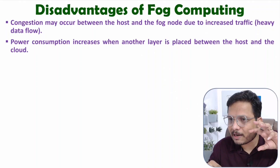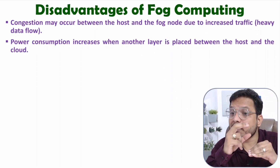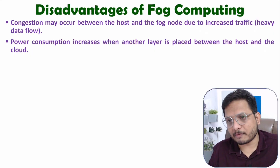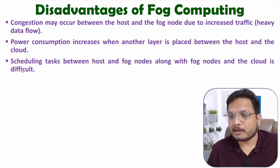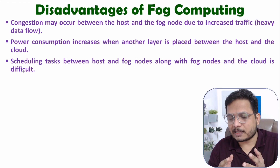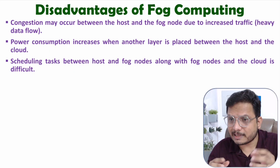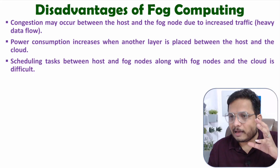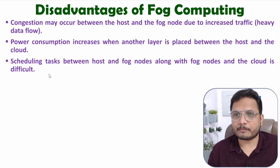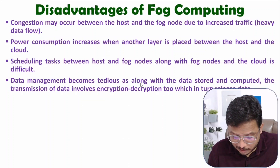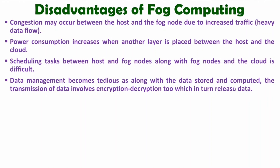Power consumption increases because we are adding an additional node — the fog cloud. Previously in cloud computing one device accessed the cloud directly, but now we are adding an additional fog node, increasing power consumption. Scheduling tasks between the host and fog nodes, and between fog nodes and the cloud, is also difficult. As user density increases, congestion increases and scheduling of tasks becomes harder. Data management also becomes tedious.